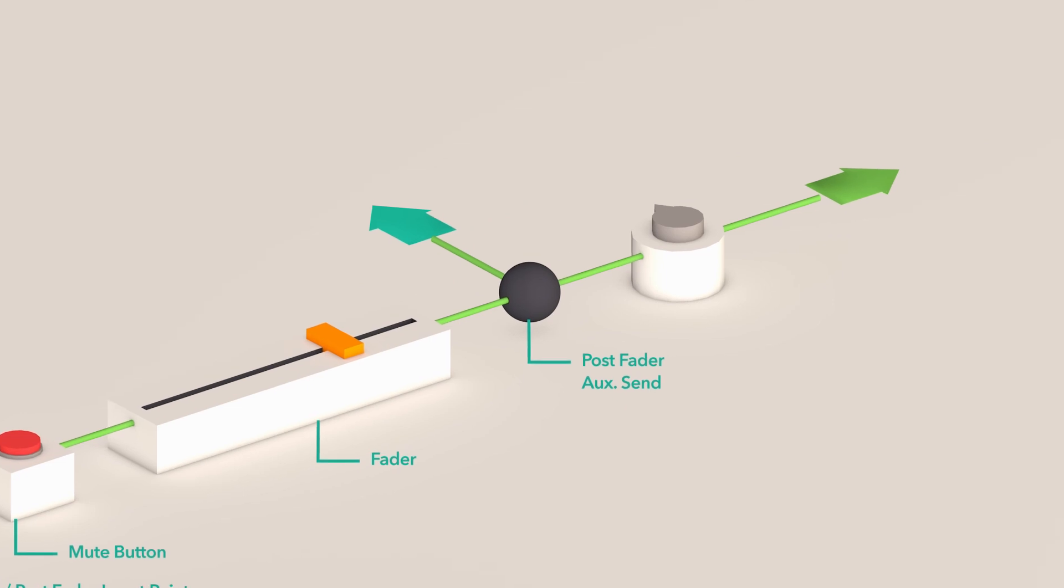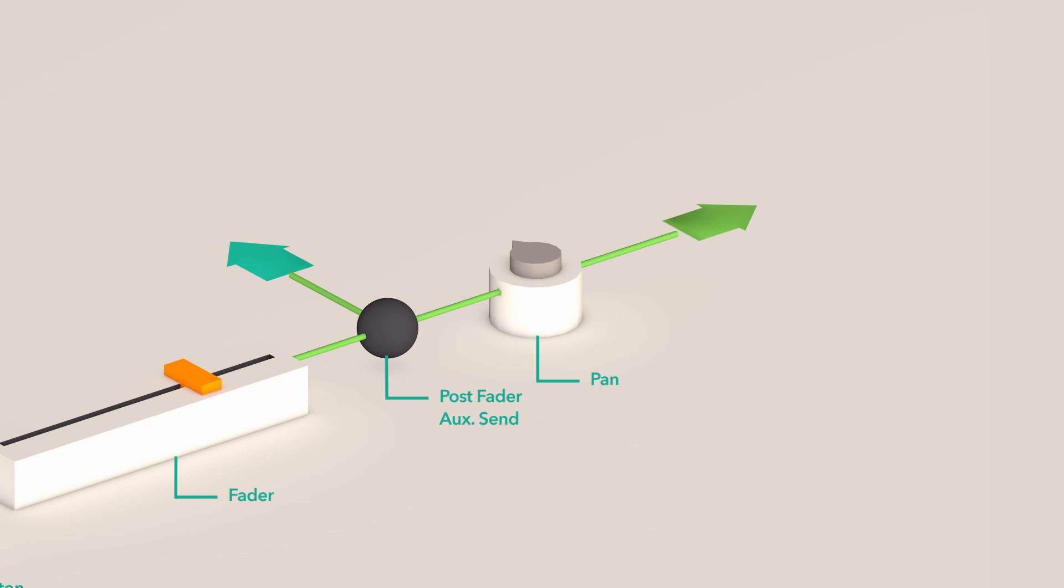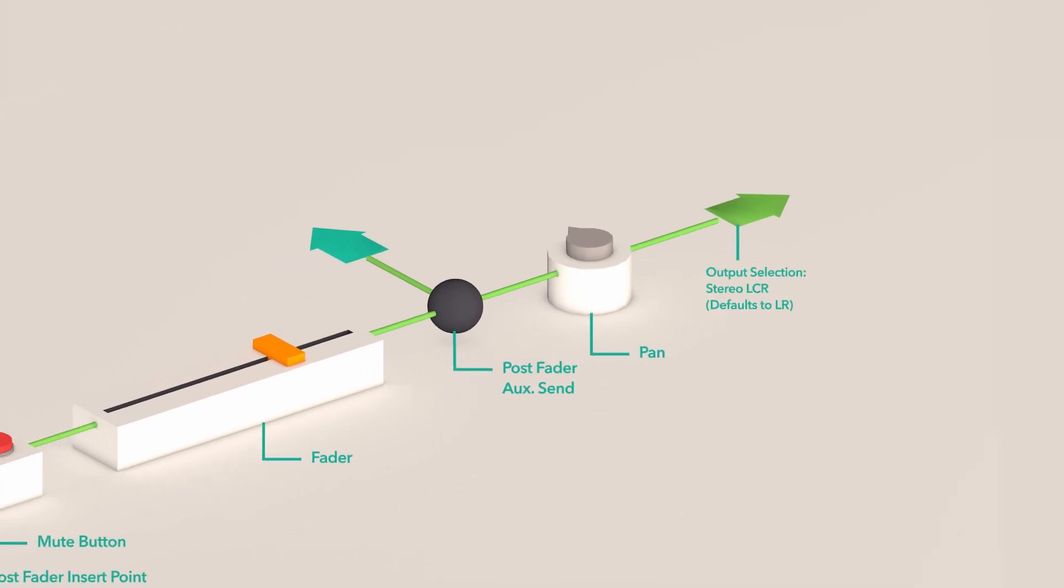The post-fader aux send is the point where all aux sends will be affected by the fader position. The pan will legislate the left and right balance of the channel. The output selection, stereo, left, center, right, is where output routing selections are made.